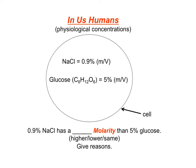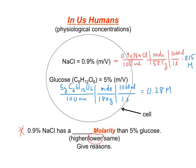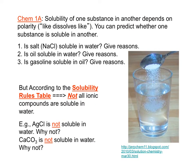Our cells contain 0.9% NaCl and 5% glucose. In Chem 1A, we use the like-dissolves-like rule to predict whether one substance is soluble in another.